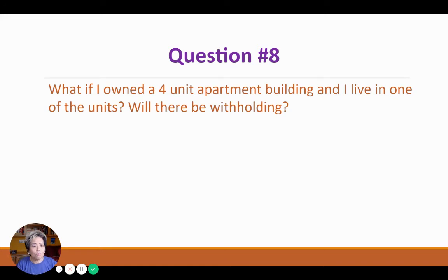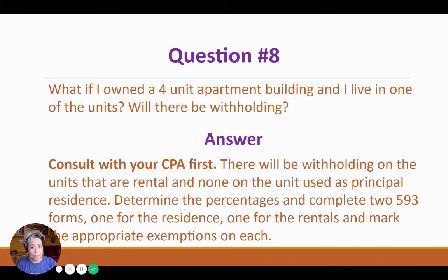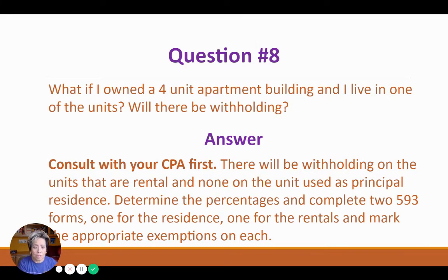Question number eight: What if I owned a four-unit apartment building and I live in one of the units? Will there be withholding? Yes, there will be, but you need to consult with your CPA first. There will be withholding on the units that are considered a rental, but there will not be any on the unit that is considered your principal residence. So you need to determine the percentage that you're going to allocate to the rental and to your principal residence. You need to complete two 593 forms — one for the residence, one for the rental — and then in each, you're going to mark the appropriate exemptions.